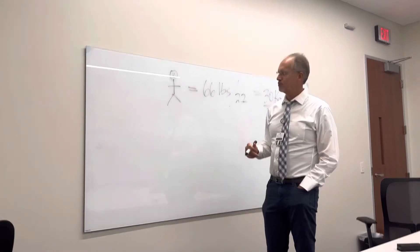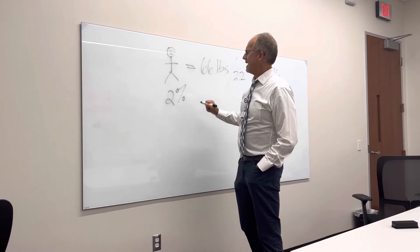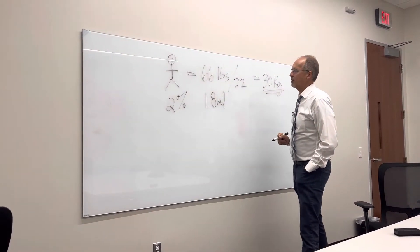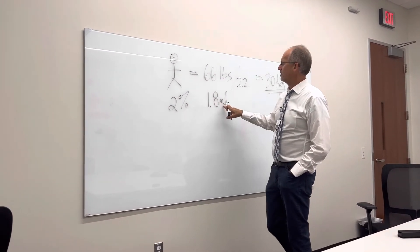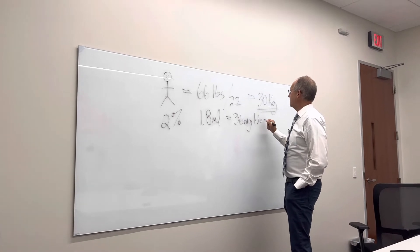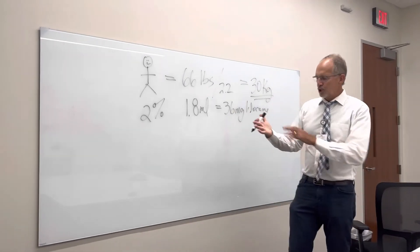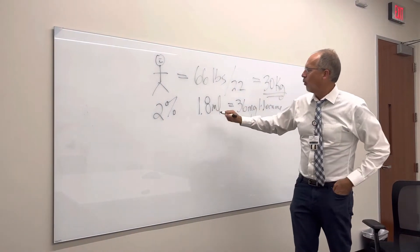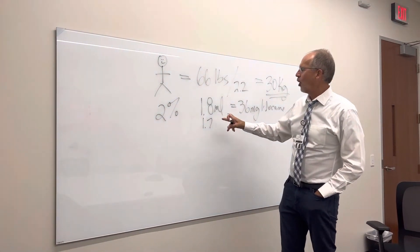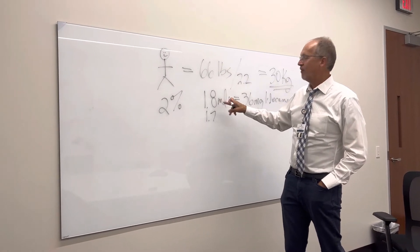The next thing we want to know is what kind of drug are we going to use? We're going to use lidocaine, and lidocaine typically comes in a 2% cartridge. In this cartridge there are 1.8 milliliters of volume of solution, and in this 1.8 milliliter carpule there is 36 milligrams of the lidocaine drug in it. If you look at the carpule, you'll see that it says 1.7 milliliters, but it actually has a little bit more, so we're going to do our calculations off of a volume of 1.8 milliliters.